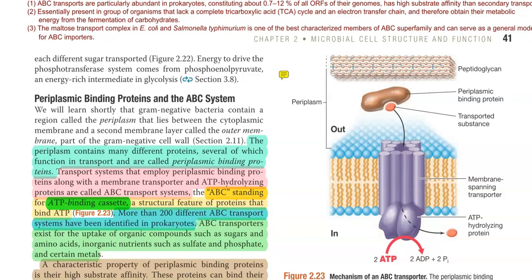In this screencast video lecture, we will try to understand about the ABC transport system, which is a primary active transport system operating in any kind of organism.